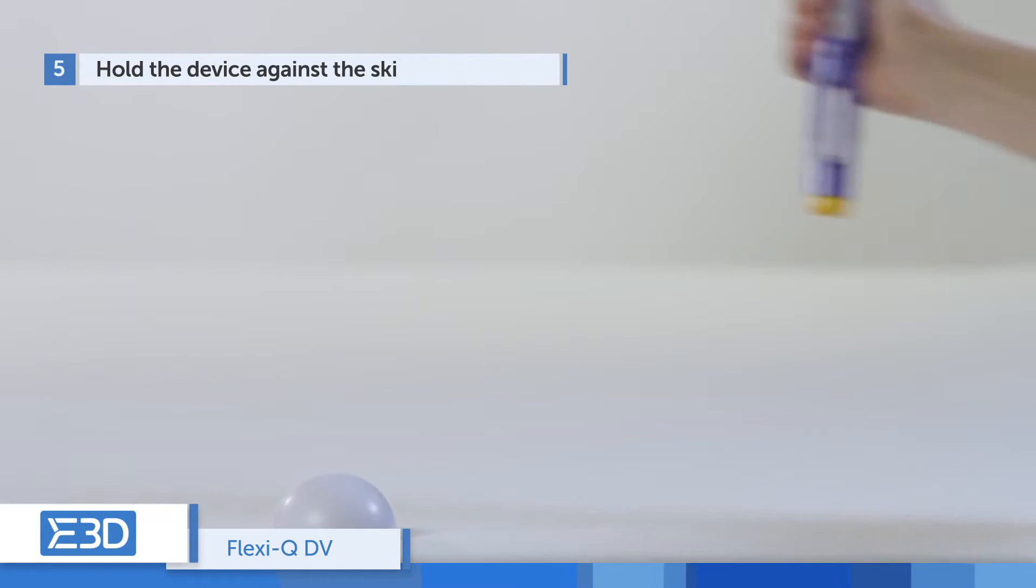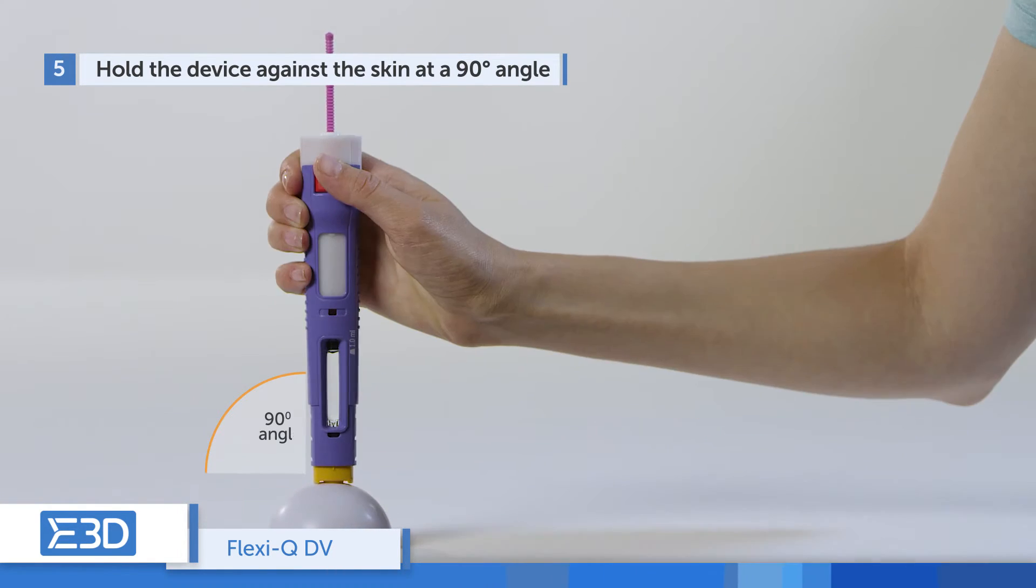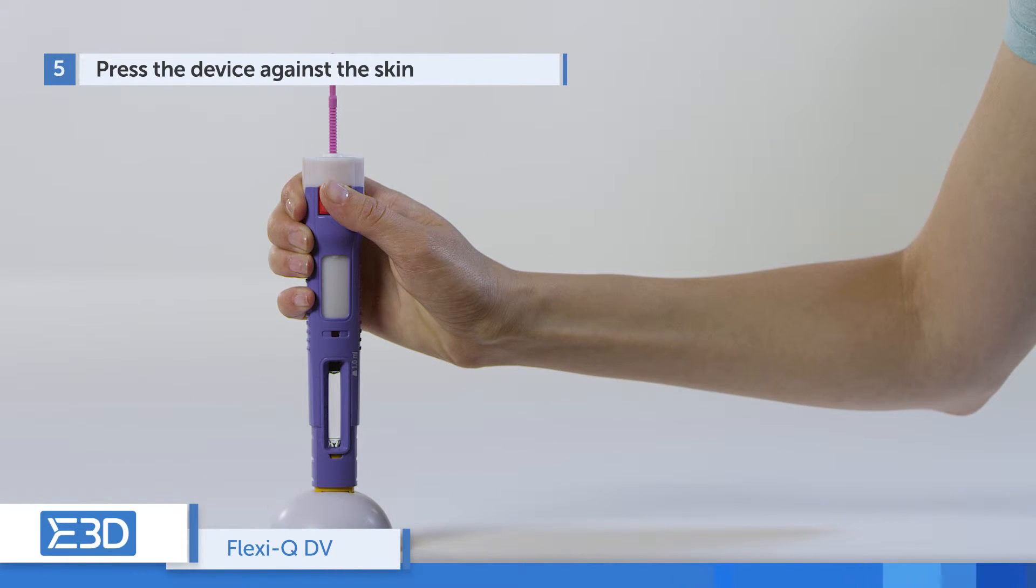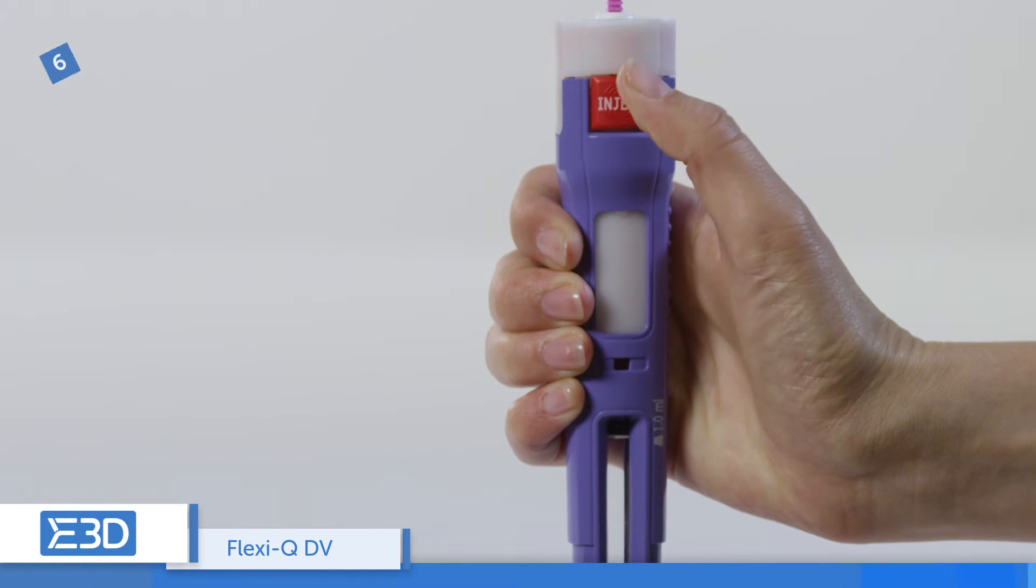Hold the device against the skin at a 90 degree angle. Press the device against the skin. Press the inject button.